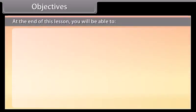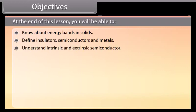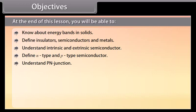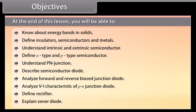Objectives. At the end of this lesson, you will be able to: know about energy bands in solids; define insulators, semiconductors and metals; understand intrinsic and extrinsic semiconductors; define N-type and P-type semiconductors; understand P-N junctions; describe semiconductor diodes; analyze forward and reverse biased junction diodes; analyze V-I characteristics of a P-N junction diode; define rectifier; and explain Zener diode.